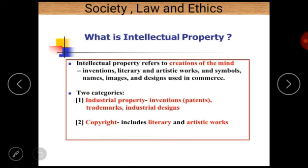Now here is a detailed definition of intellectual property. Intellectual property refers to the creation of the mind. The focus here is on 'creation of mind,' which basically includes inventions, literary and artistic works, and symbols, names, images and designs used in commerce. There are two basic categories: first is industrial properties, which include inventions, patents, trademarks, industrial designs, etc.